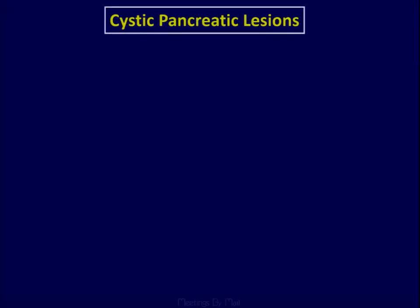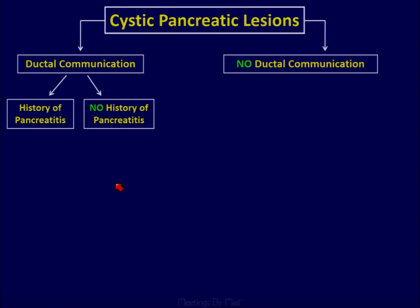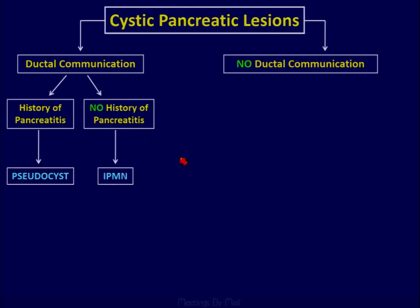Here is a quick algorithmic approach to the differential diagnosis of cystic pancreatic lesions. Imaging is very important, and we look for ductal communication, best seen on MRI. If you see ductal communication, history becomes important. If there is history of pancreatitis, it's a pseudocyst for the most part. No history of pancreatitis, most likely IPMN.